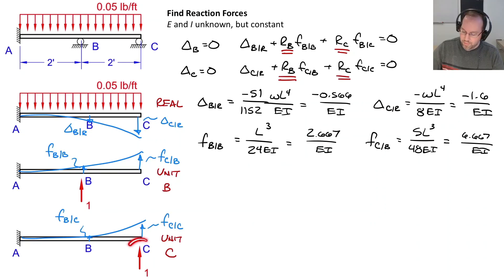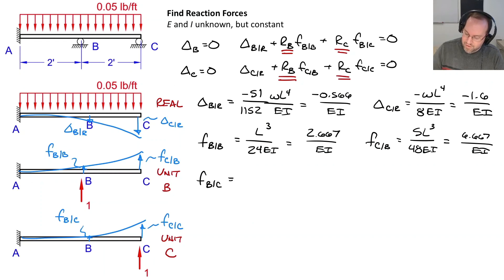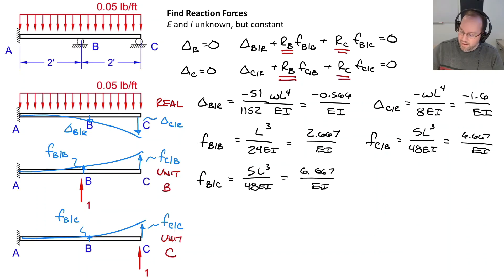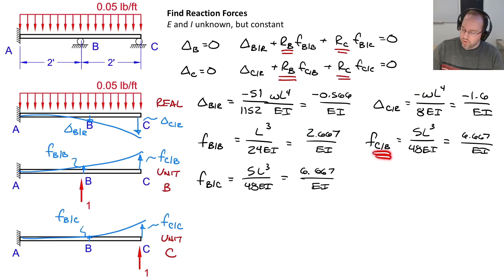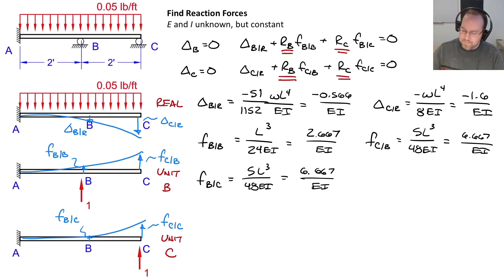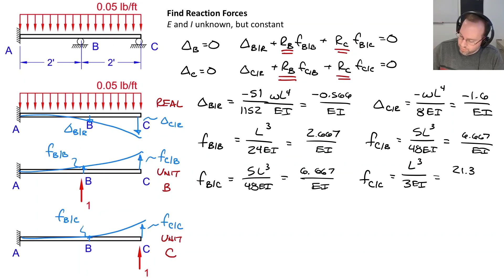For the unit load at C, the flexibility F_BC also equals 5L³/(48EI) = 6.667/EI — the same as F_CB. This will always happen due to Betty's law, a property of linear structures: flexibility is symmetric, so switching the location of the force and the location where you measure displacement always gives the same result. Finally, F_CC equals L³/(3EI), which equals 21.33/EI.